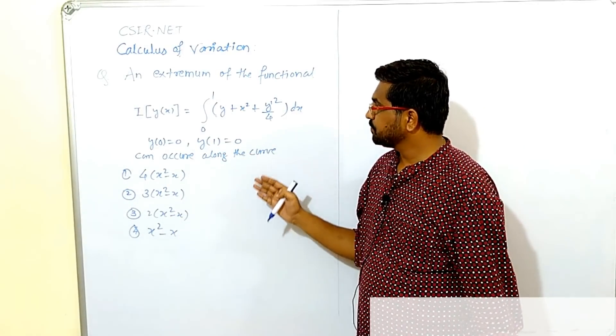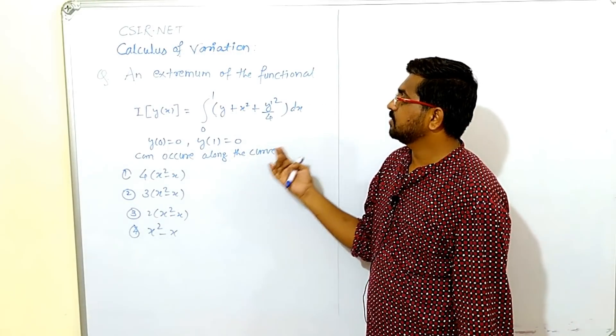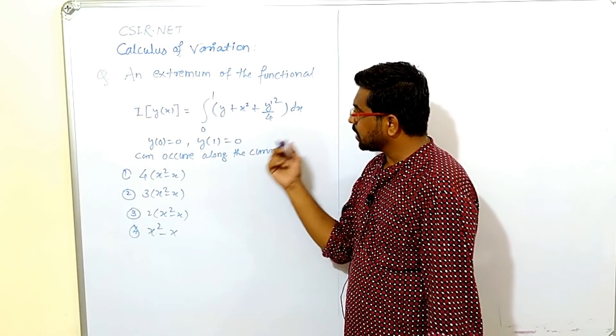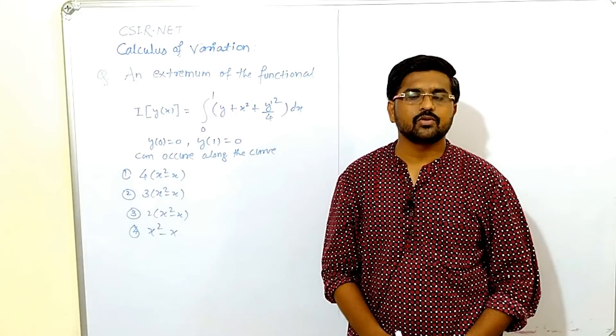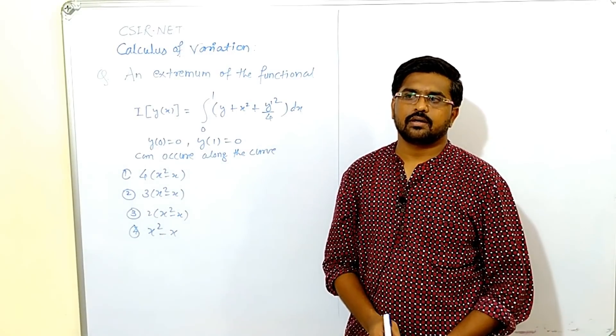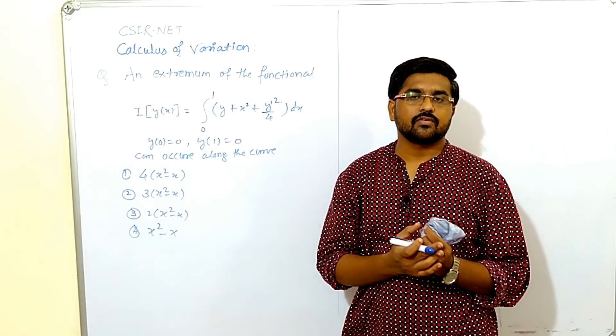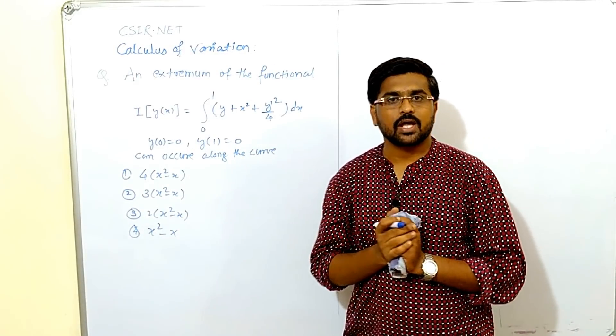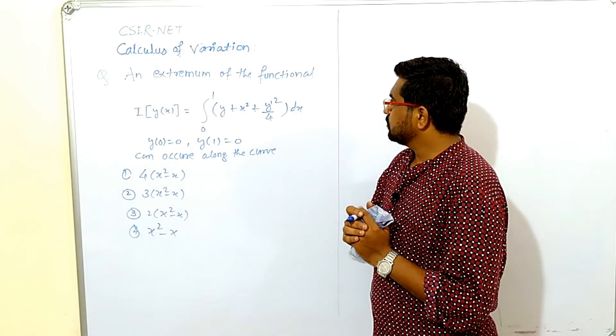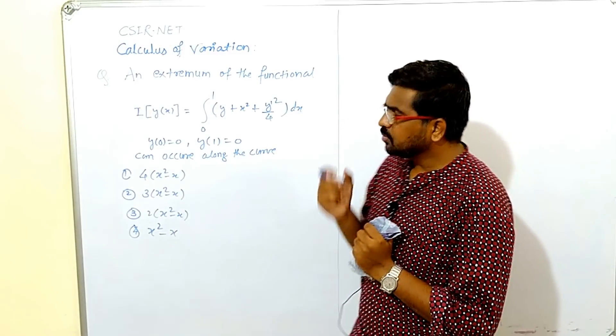We have to find its solution, that extremum of the functional. Such type of problem we can solve by using Euler equation. I have uploaded so many videos on this topic by using Euler equation how to solve such type of problem from calculus of variation. Please go through that first of all. Let us start, how to solve this?